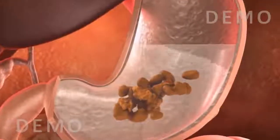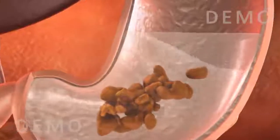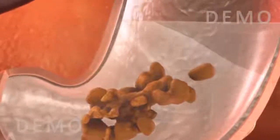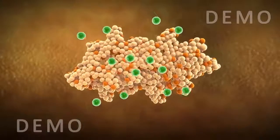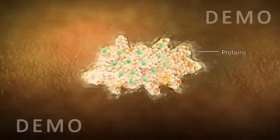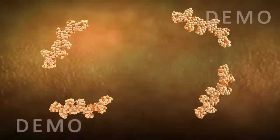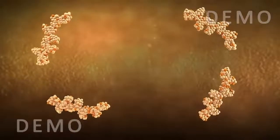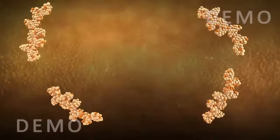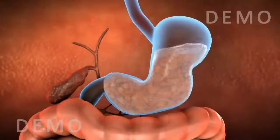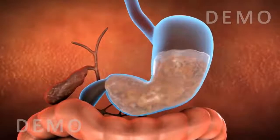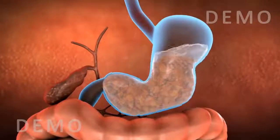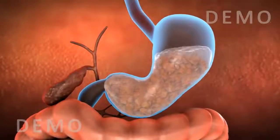The hydrochloric acid kills the bacteria that enter along with the food and also helps in the digestion of proteins. The digestive juices start breaking down the proteins present in the food into simpler forms.